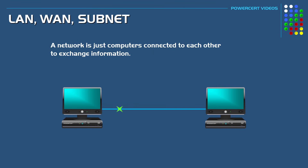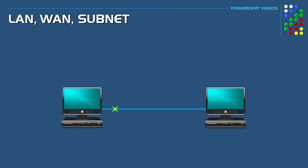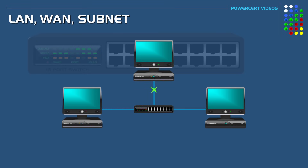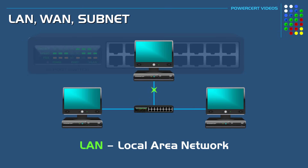These computers can be connected by using either a cable or a wireless connection. Now the most common way for computers to connect to each other is by using a switch. A switch is a central wiring point with multiple ports so that two or more computers can connect to each other to create a network. Since we have created a network, this is called a LAN or local area network.